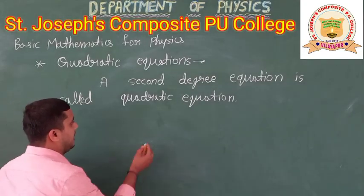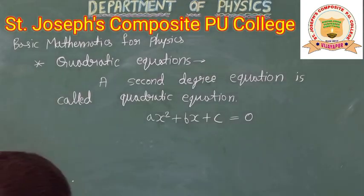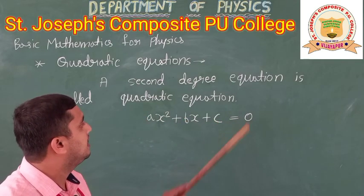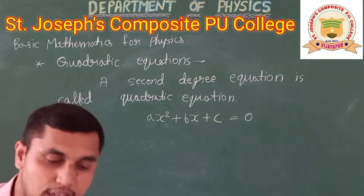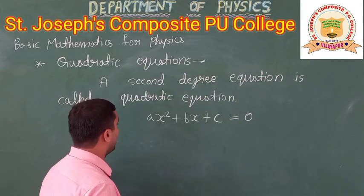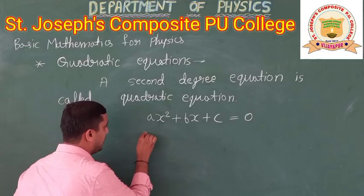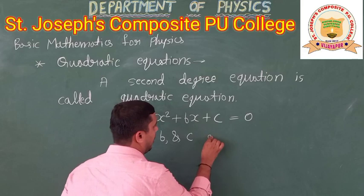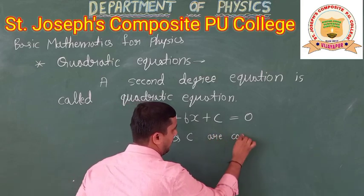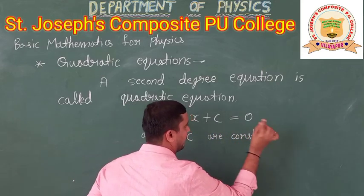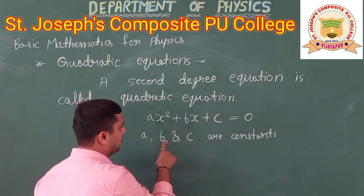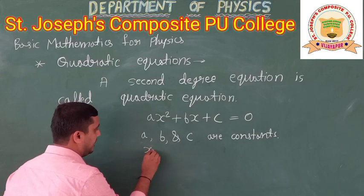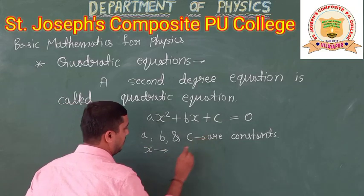This is written mathematically as AX² + BX + C = 0, which is the general form of a quadratic equation. Here, A, B, and C are constants and X is a variable.